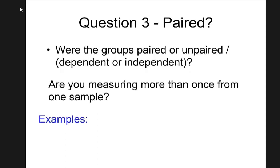Whether data are related or not directly changes probability computation — and what is p-value? That's the probability. For example, the probability of randomly picking two unrelated people from this class who both move to Atlanta next month — each with 1% chance — is 0.01 × 0.01 = 0.0001. But if they're married, and one moves, the other likely follows — so the probability is closer to 1%.